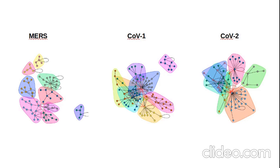We went on to construct the networks from these differentially expressed genes using iGraph, which is an R package, and identified modules via the Louvain algorithm within iGraph. These were the networks we constructed. I focused on the CoV-2 data because it was most interesting, and performed clustering analysis on it, then looked at the specific clusters and performed ontology analysis on these.